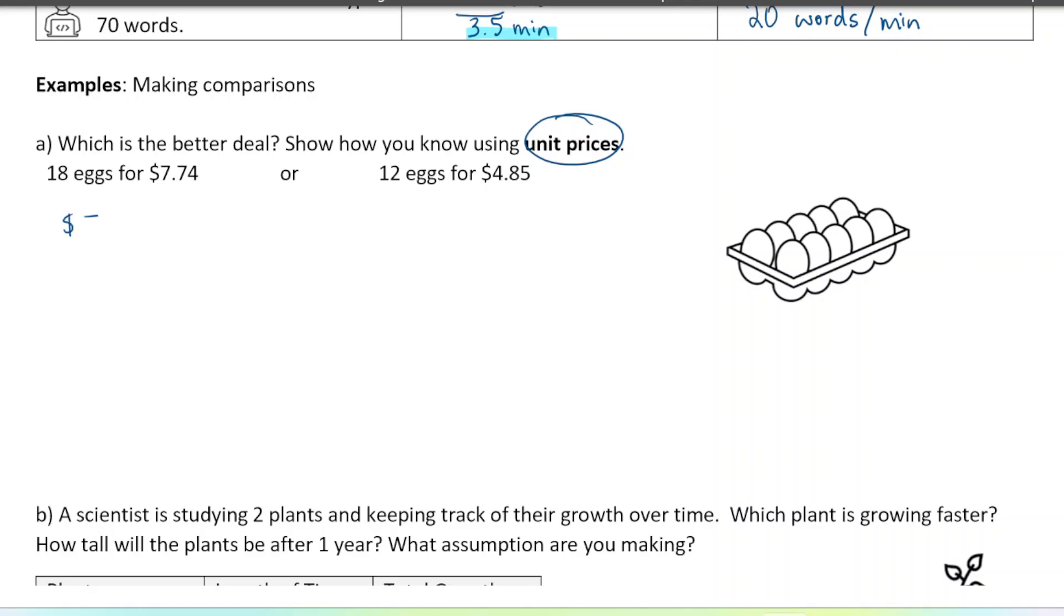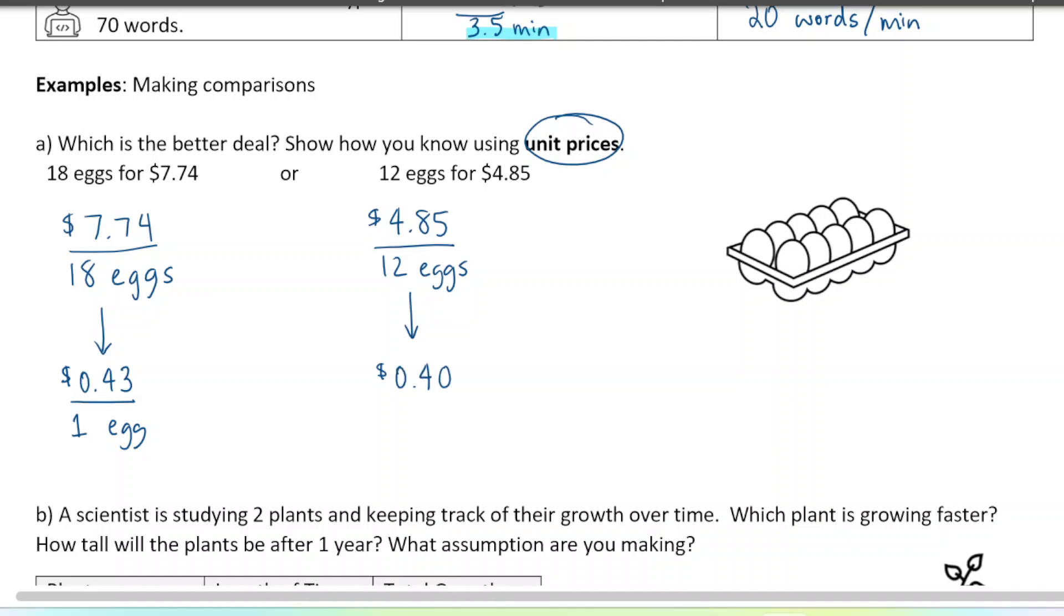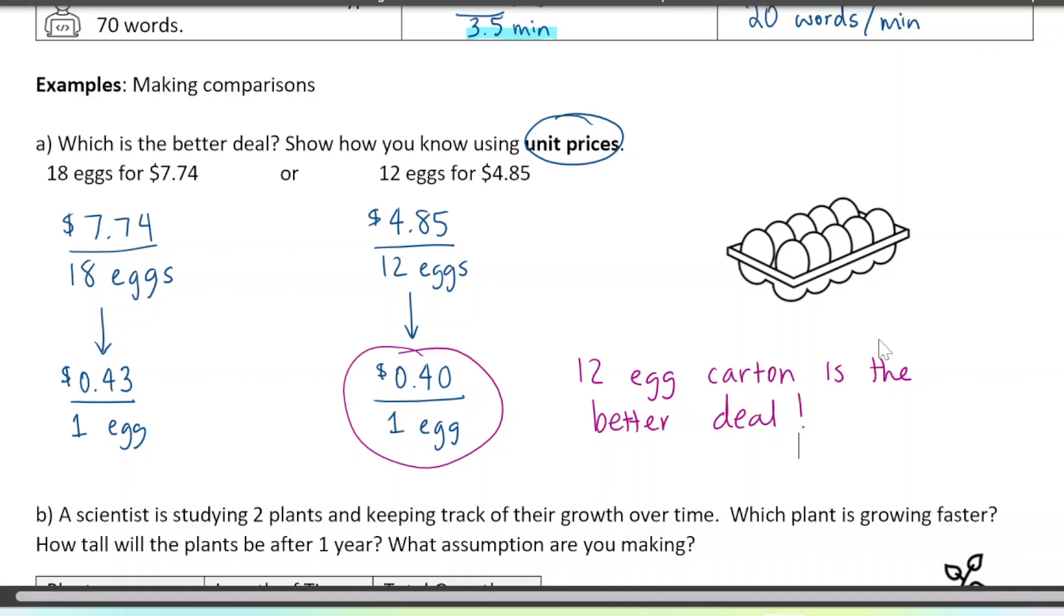Okay, so money always goes on top - $7.74 for 18 eggs. We're going to convert that to a unit price just by dividing and we would see that you get 43 cents for one egg. Let's do the same for the other one. $4.85 for 12 eggs. Just divide those numbers, 4.85 divided by 12, and you get about 40 cents - I have to round it off but usually we round to two decimals for money - so for one egg. Now comparing these ones we can see that this one is the cheaper one, it's less amount of money per egg, so the 12 egg carton is the better deal. So you don't want to look at the total price when you're shopping, you want to look at the unit price, the price per item, to compare which one's the best deal.